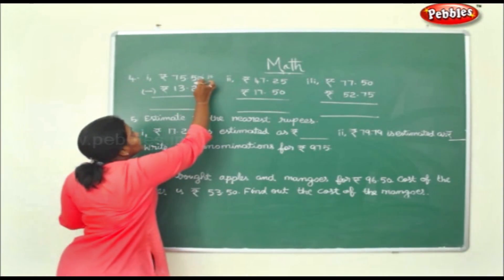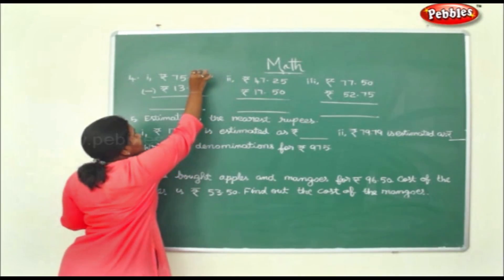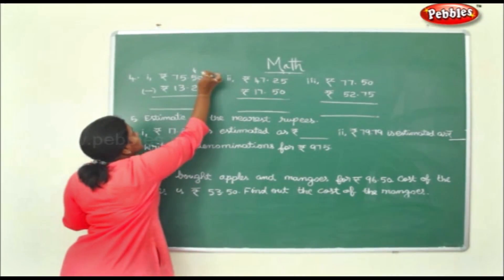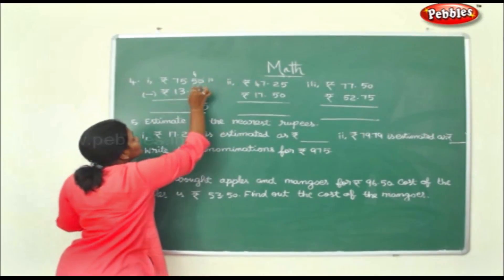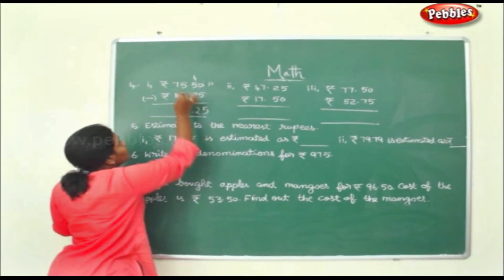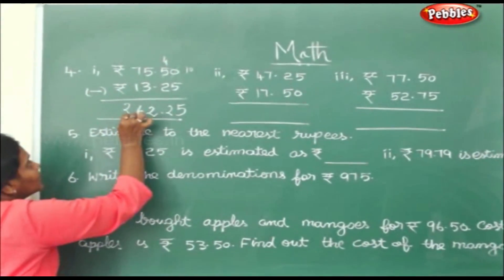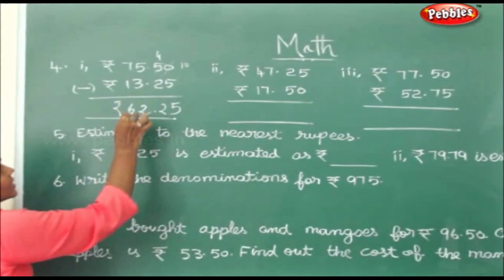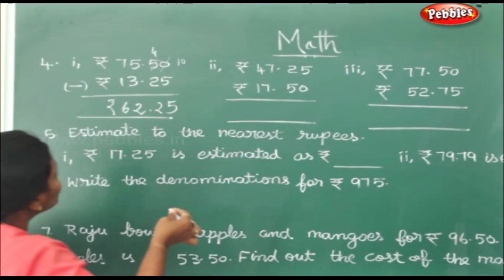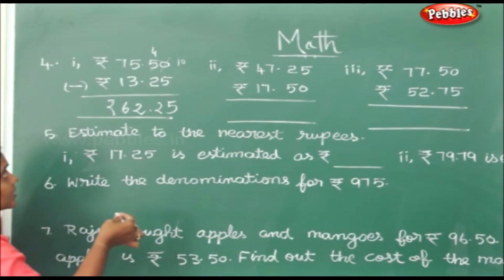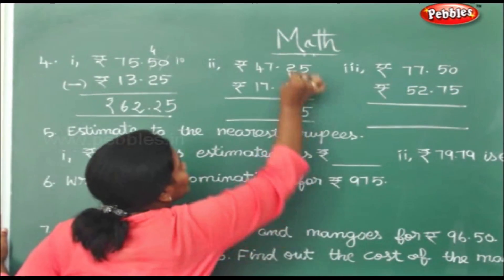You cannot take away 0 from 5, so this becomes 10 and this becomes a 4. 10 minus 5 is 5, 4 minus 2 is 2, 5 minus 3 is 2, 7 minus 1 is 6. So this will be rupees 65 and 25 paise, or 62 and 25 paise.